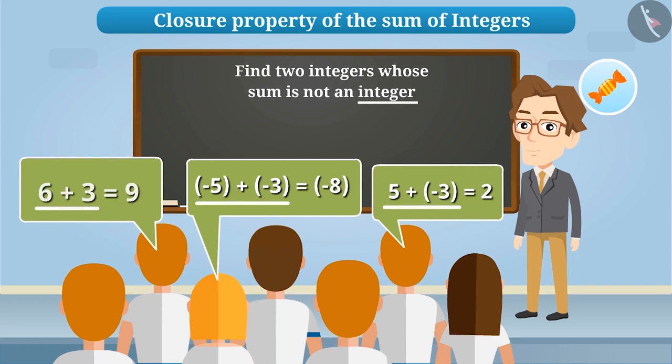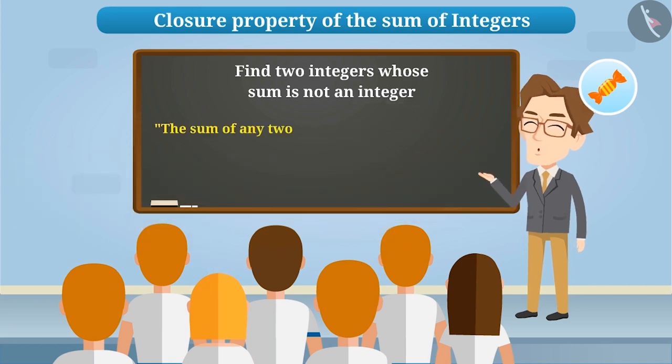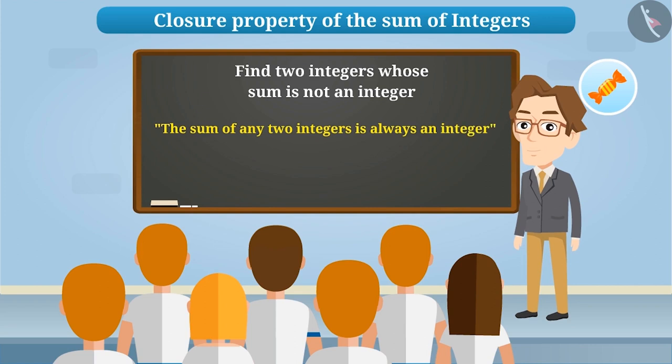In each case, they obtained the result an integer. Seeing the children getting confused, the teacher said, the sum of any two integers is always an integer, so you will not be able to find two integers whose sum will not be an integer. The children were annoyed on hearing that.